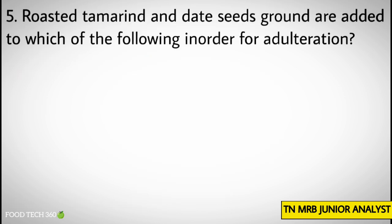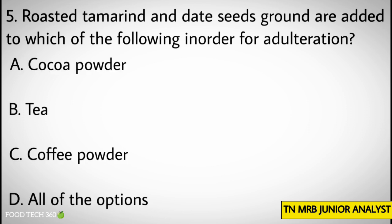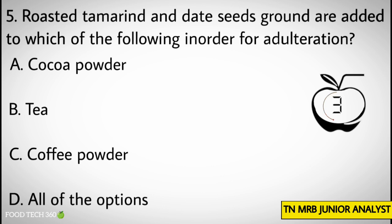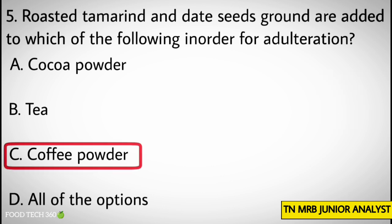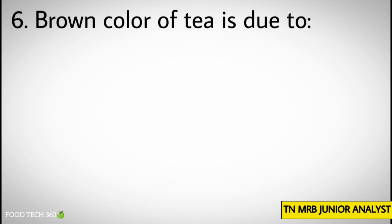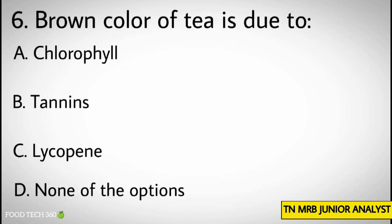Question number five: Roasted tamarind and date seeds ground are added to which of the following for adulteration? Options: A) Cocoa powder, B) Tea, C) Coffee powder, D) All of the options. Correct answer: C) Coffee powder. Question number six: Brown color of tea is due to? Options: A) Chlorophyll, B) Tannins...